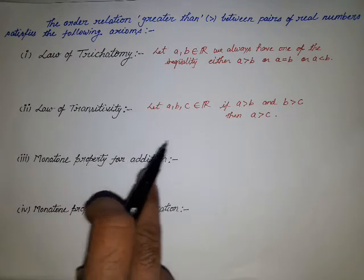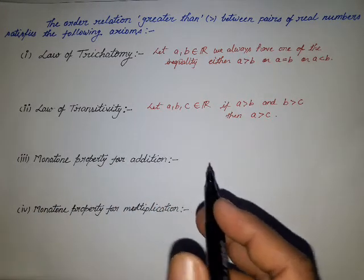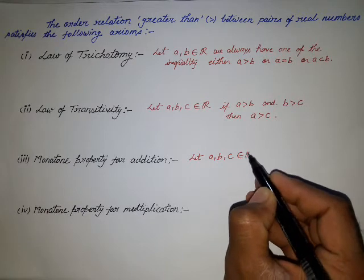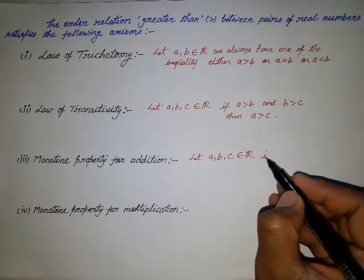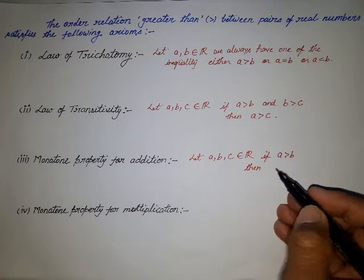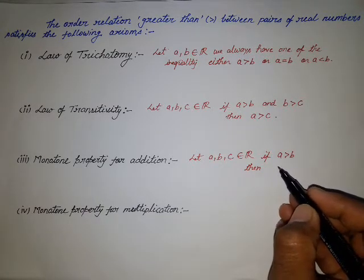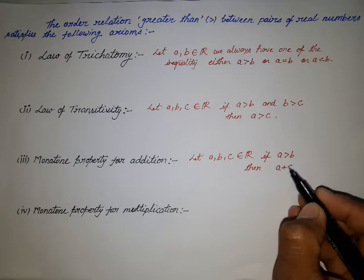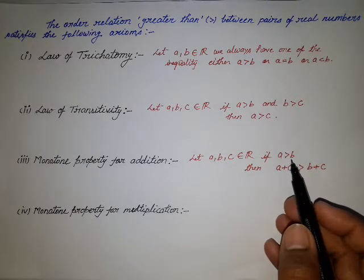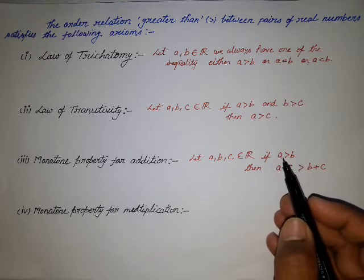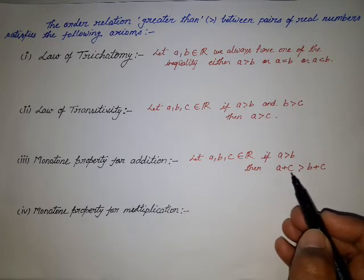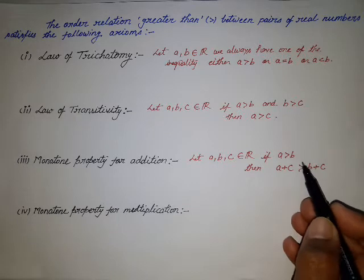The next property is the Monotone Property of Addition. For three distinct numbers a, b, and c belonging to the set of real numbers: if the inequality a is greater than b is given, and we add the number c to both a and b equally, then the inequality remains the same.